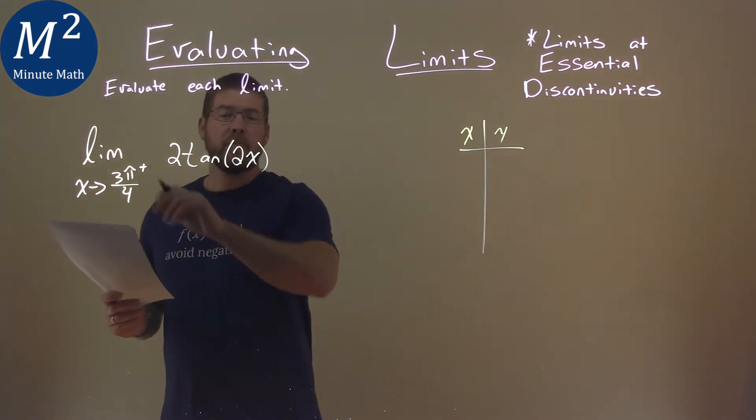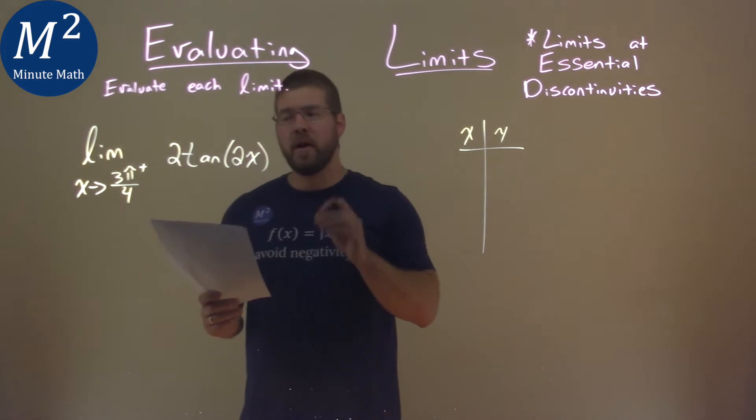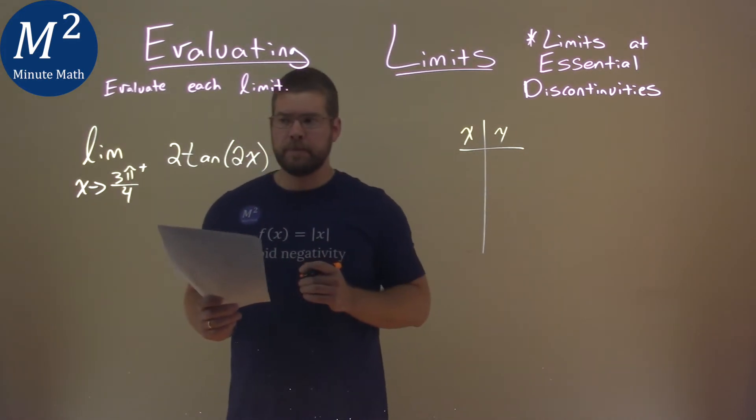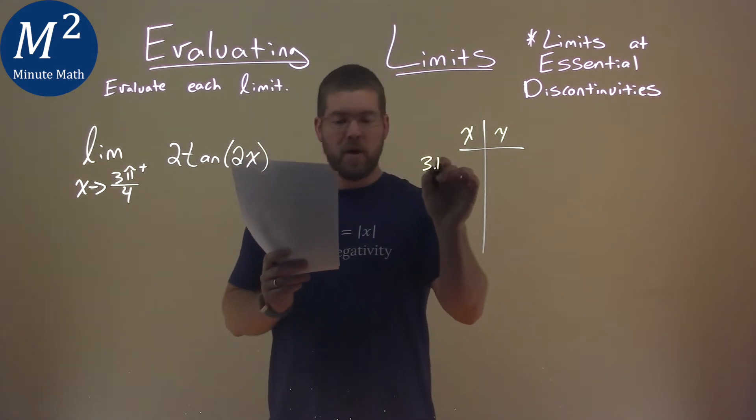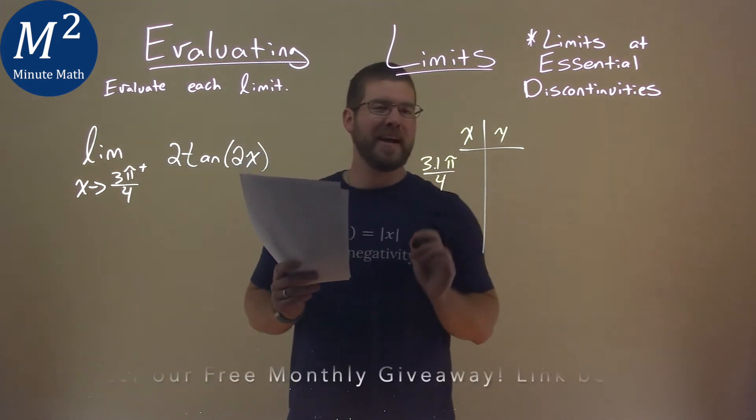Now, I'm going to see what happens if we approach 3π/4 from the right of our function here. So to approach from the right, I'm going to do 3.1π/4.